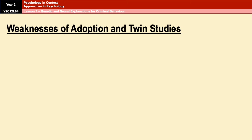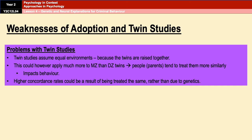A weakness of twin studies is that they tend to assume twins were raised in equal environments. However, parents tend to treat identical twins much more similarly than non-identical twins — in many cases effectively treating them as the same person — and that will impact behaviour. So the higher concordance rates recorded for identical twins could be a result of them being treated the same rather than due to genetics, which presents itself as a confounding variable.